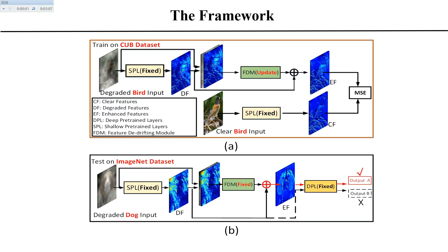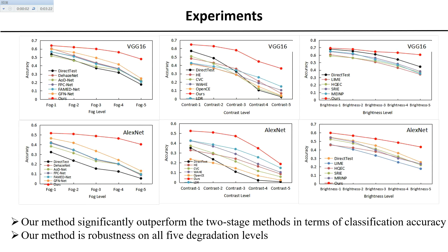This is our framework. The training of our feature de-drifting module does not need semantic labels for supervision. After training, we insert our module into a pre-trained classification network for testing. We test our method on fog, low contrast, and over-exposure conditions.